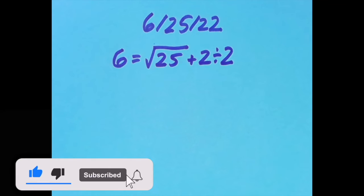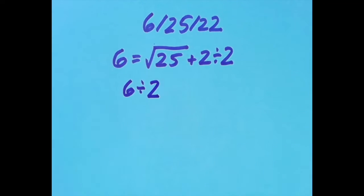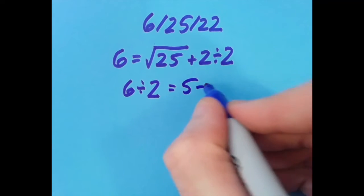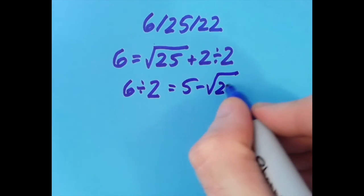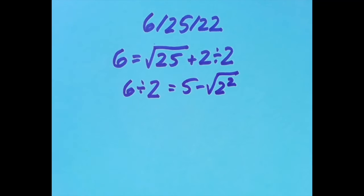Then I tried it a few different ways. I moved the equal sign over one spot to the right and said that 6 divided by 2, which is 3, is the same as 5 minus the square root of 2 squared. Here we have 4; the square root of 4 is 2, and 5 minus 2 is also 3.